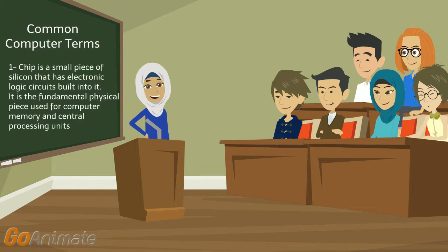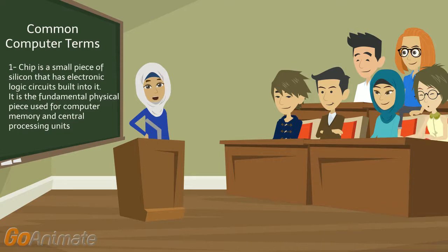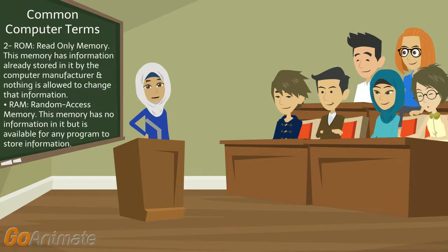There are some computer terms you should know. The first is the chip, which refers to a small piece of silicon that has electronic logic circuits built into it. It is the fundamental physical piece used for computer memory and the central processing unit. The second term is memory. Read-only memory has information already stored in it by the computer manufacturer, and nothing is allowed to change that information.